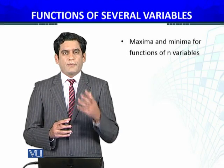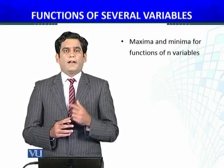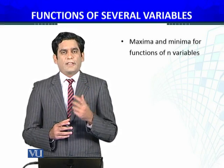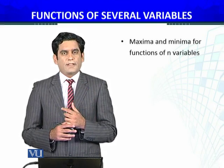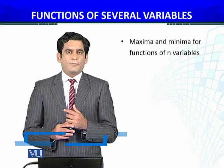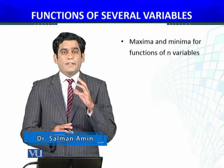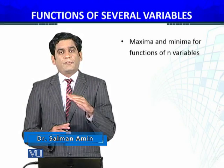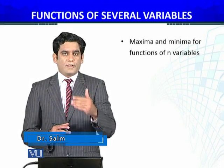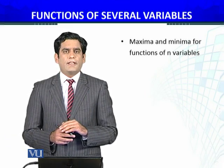If you remember, for a function of one variable, we have the result that an extreme value at x₀ is possible only if the first derivative equals zero. We will now extend that result to functions of several variables.